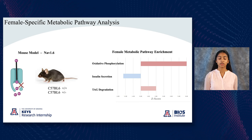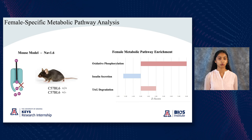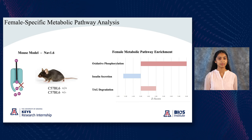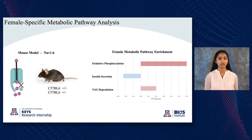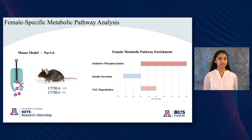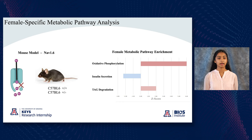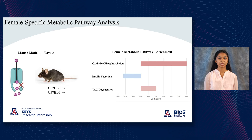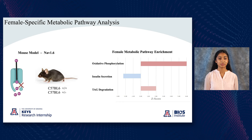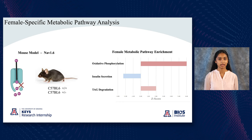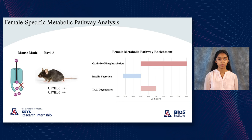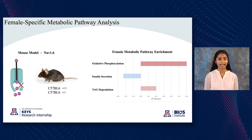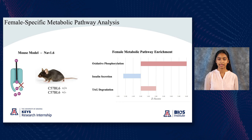For example, before seizure, the oxidative phosphorylation pathway — the production of ATP from glucose — was upregulated. Whereas after seizure, the insulin secretion pathway — transportation of glucose — was downregulated, and the TAG degradation pathway, which involves the breakdown of lipids or fats, was upregulated. Using this information, I conducted a bioinformatics literature review and proposed that the reason females are able to alter their pathways in such a manner is because of female-specific hormones such as estradiol and estrogen.